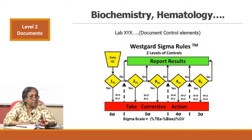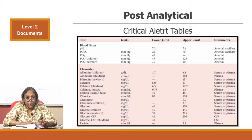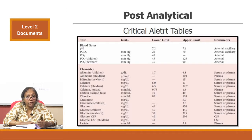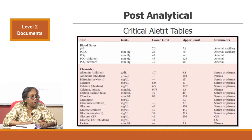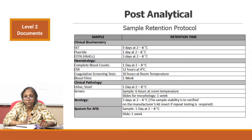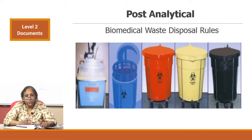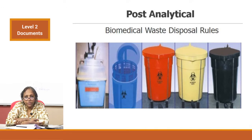These job aids cover the pre-analytical, analytical, and post-analytical phases. A QC job aid can be put up to show rules for rejection under multi-rule protocols. Post-analytically, critical alert tables should be available at multiple points — near your equipment and wherever analysis happens — so the technician can immediately report a very high or very low value. Sample retention protocols should be available at the sample storage fridge, indicating how long each kind of sample is stored. Biomedical waste disposal protocols should be posted at the segregation point.